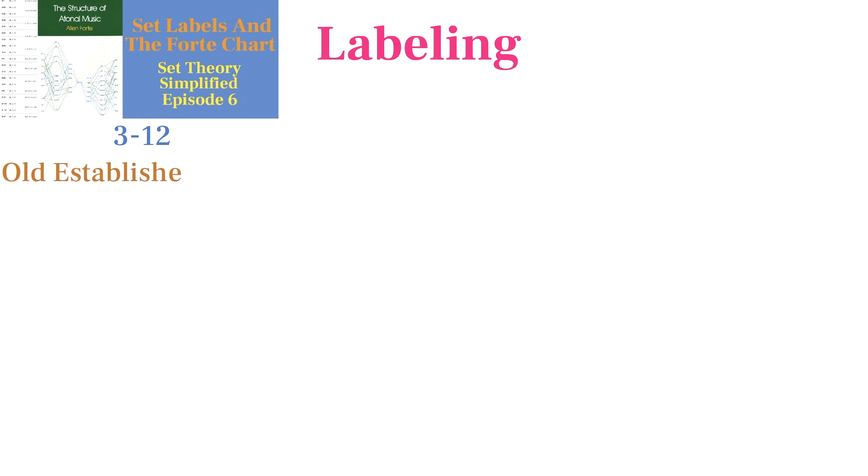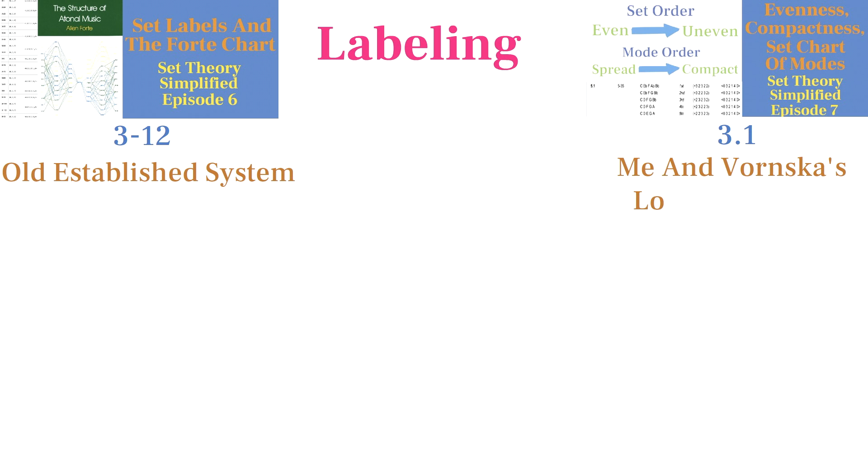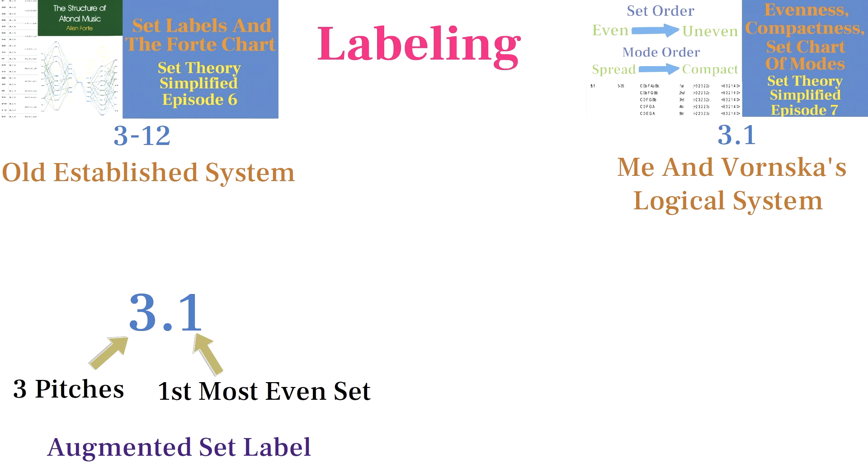In set theory, we label each kind of shape with either Fort numbers that use a dash or Spread numbers that use a decimal. You can watch the videos on how each labeling system works, but in short, the first number tells us how many pitches are in the set, and the second number tells us where that set lies on the spectrum of sets with its number of pitches.